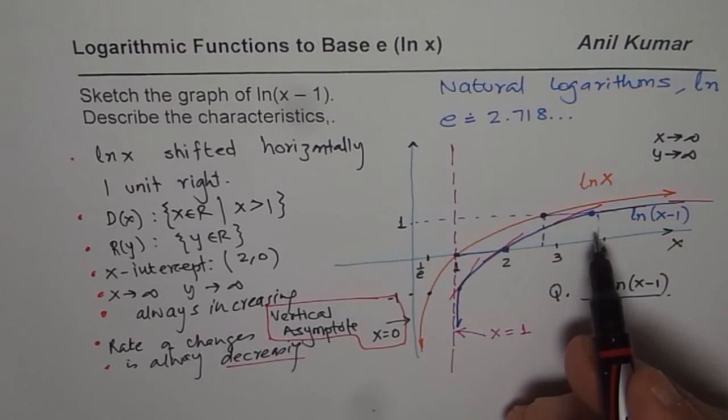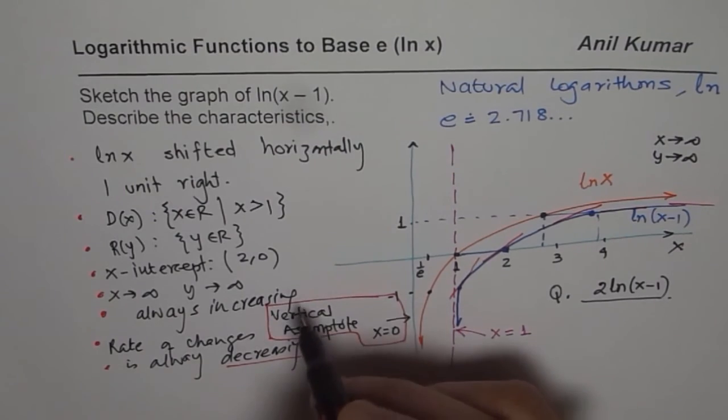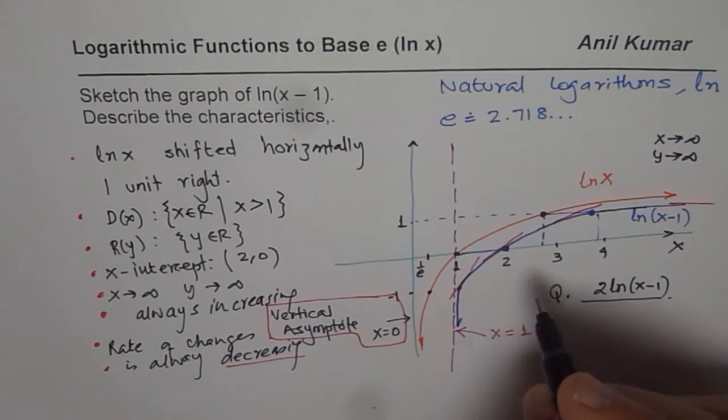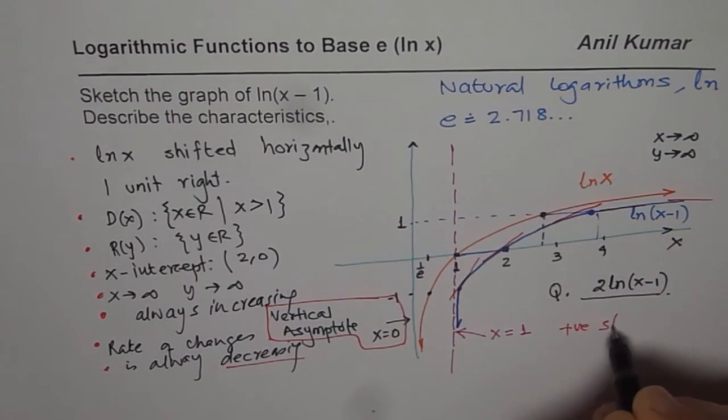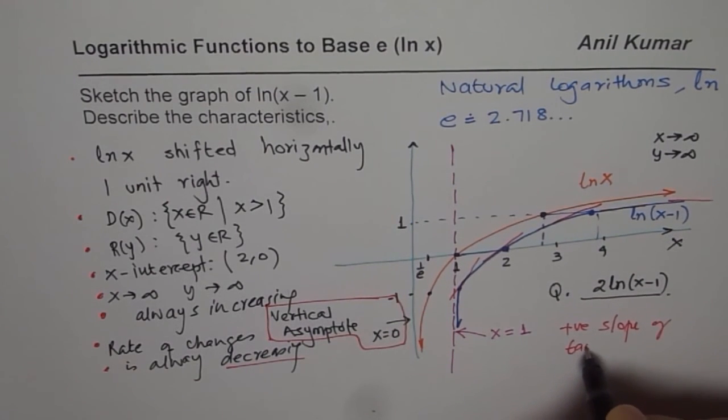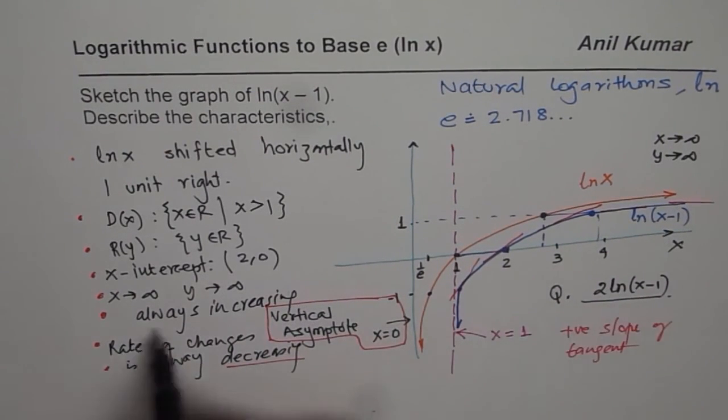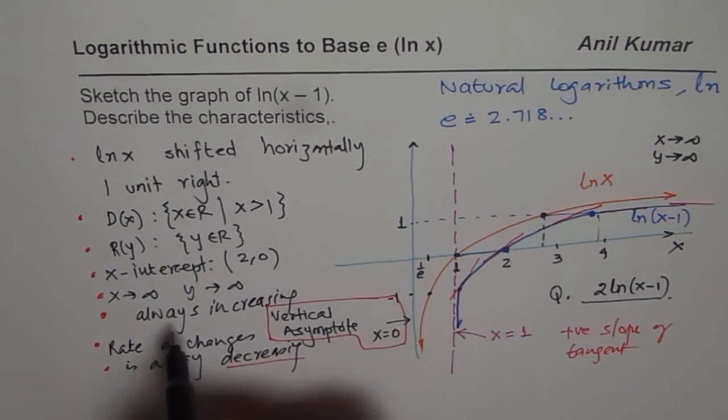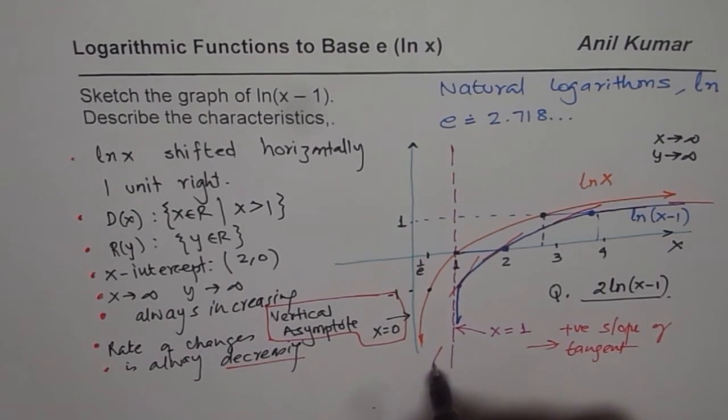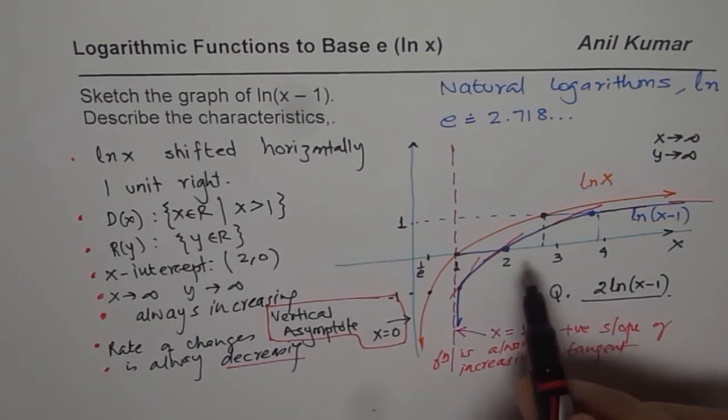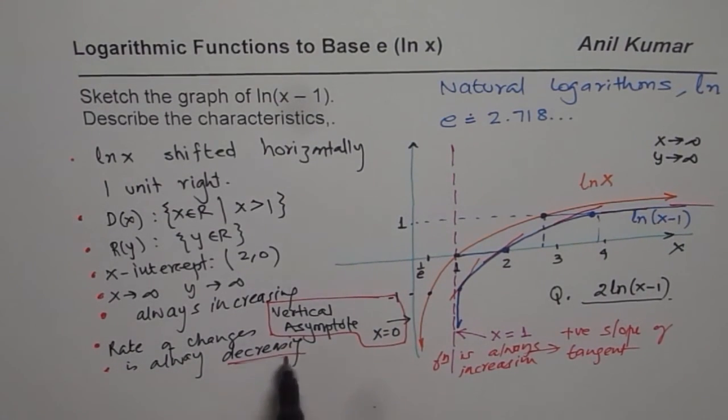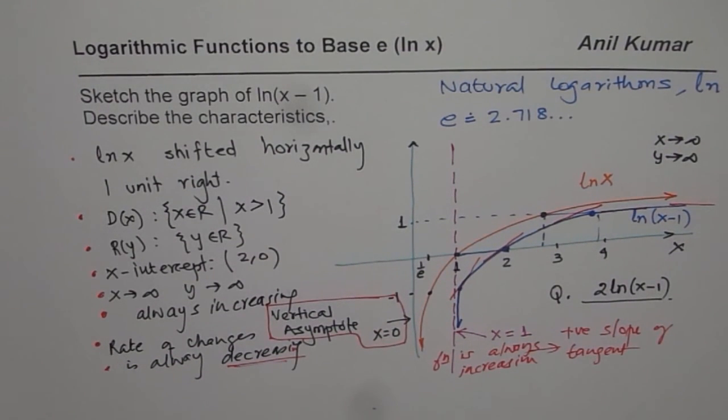So rate of change decreases; function is always increasing. It means that the slope is positive for the tangent. Positive slope of tangent means the function is increasing. But since the slope is decreasing, rate of change is decreasing. That is kind of very critical to understand.